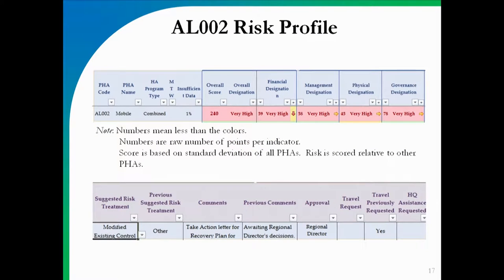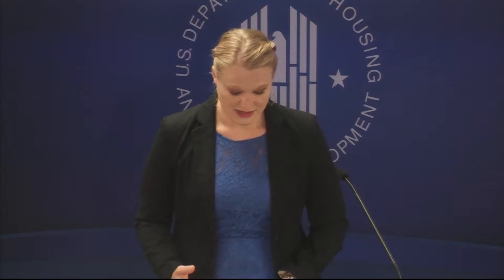Looking at Mobile Housing Authority's risk profile, they're not doing well in a lot of areas. One of the great parts of this tool is the trend arrows — for example, in financial there's a yellow square showing it started as moderate and has gone down to high risk. So it helps us understand where they've come from, where they're going, and what folks have said they want to do about this agency. The numbers really don't matter — the colors are what count. Whether it says 248 or 249 doesn't matter; what matters is the color of the box.